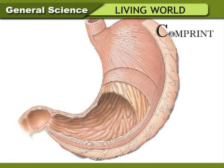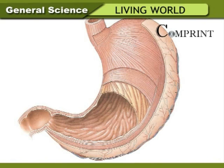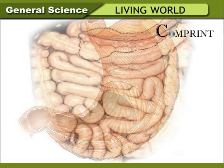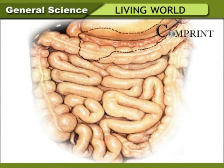Gastric glands are present in the walls of the stomach. They secrete gastric juice into the stomach. The gastric juice contains enzymes which act on chyme and change it into a simple form. The walls of the stomach also produce acid, which kills bacteria present in the food. The food then enters the small intestine. The part of the small intestine that begins from the stomach is called the duodenum.